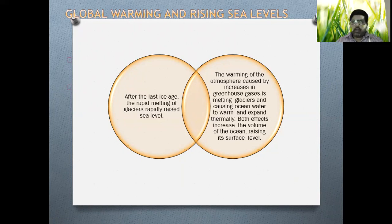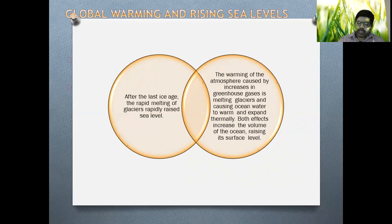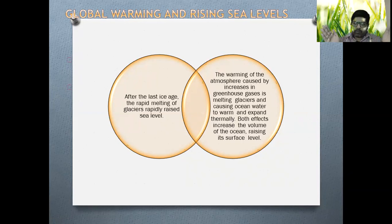Let us discuss global warming and its rising effect on sea level. After the last ice age, the warming of the atmosphere caused by increased greenhouse gases is melting glaciers and causing ocean water to warm and expand thermally. Since this is the expansion of water, it will require more space, and ocean and land tourism destinations will always be attacked. So there is interrelativity between the effect of tourism on the environment.